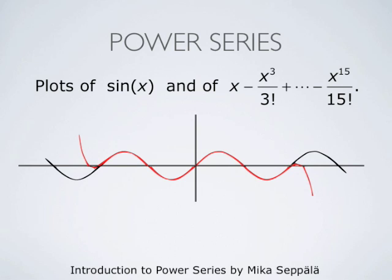If we take a still higher degree polynomial, we get a better approximation. Here is the graph of the 23rd partial sum of the power series expansion for the sine function — the red curve. The red curve now covers almost completely the black curve, and we see only parts of the black curve at the ends of the interval. This means that this approximation is already pretty good.